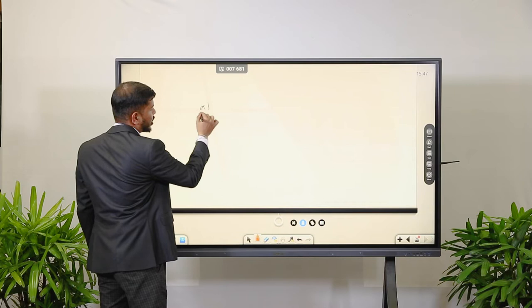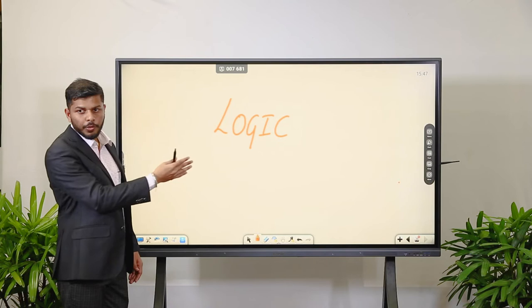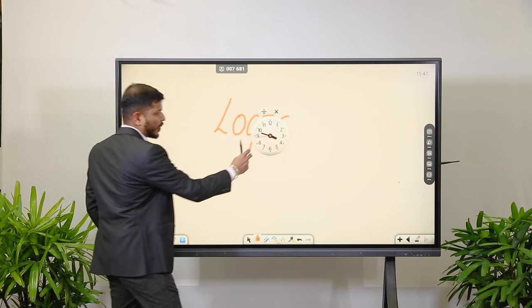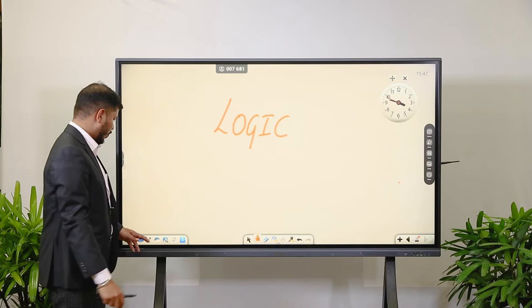After that, there is a Clock if you want to show the time to the class — you can place it anywhere in presentation mode. There is also a Calendar to show the date along with the time.